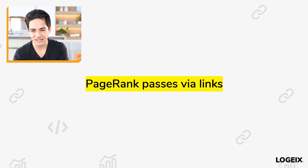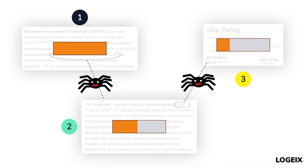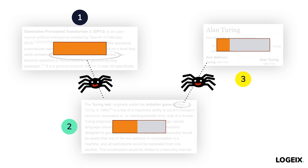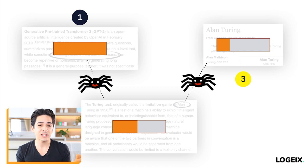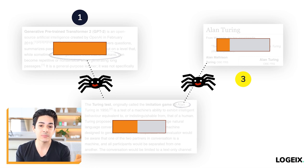In a basic example: from page one to page two, some of that page rank is being passed through — let's say half. Then from page two to page three, half of that again is passed through. It's not exactly half, but the basic idea is that page rank is passed via links. So if you want a page to be strong from a page rank perspective, you need to build internal links to it — not only external backlinks, but also as many relevant internal links as you can possibly build.